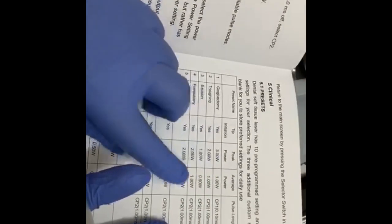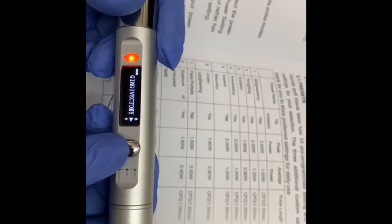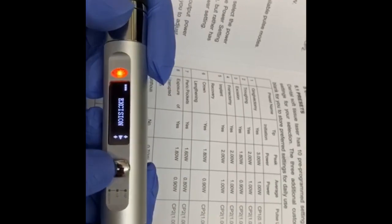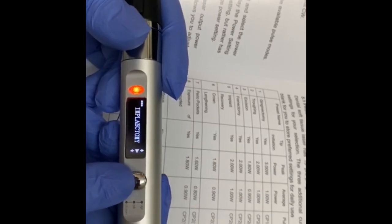So I think everything is preset over here in this pen. If I push this up you can see it is written gingivectomy, then excision, then frenectomy, then implant recovery, then crown lengthening, then perio pockets, exposure of unerupted teeth, hemostasis.